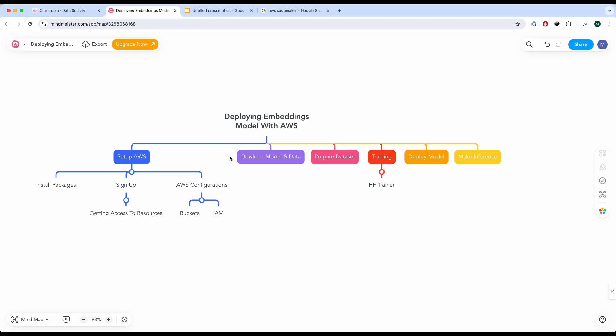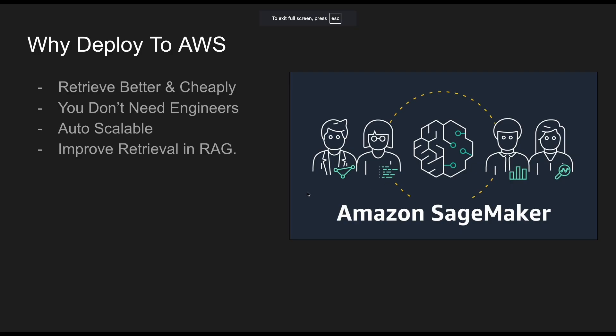In this video we're going to deploy an embeddings model using Amazon SageMaker. We're deploying it because we want to retrieve better information using an embeddings model, and this is the cheapest way to deploy open source models. Not only that, it is auto-scalable so you don't have to worry about scalability, and you can implement it without having specialized DevOps or MLOps engineers. At the end, you get to improve your RAG pipelines for the retrieval aspect.